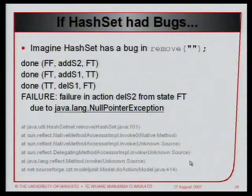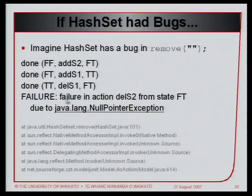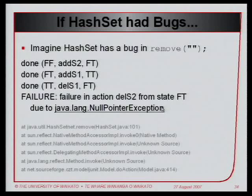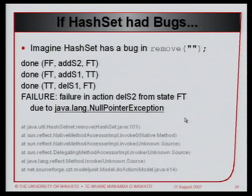Imagine HashSet had a bug — say if you try to remove an empty string, something goes wrong. When we run it, we'd see a few transitions working correctly and then get an error report like: 'Failure in action delete string 2, from state false-true' and maybe a null pointer exception, along with a stack trace. This is just an imaginary example — I don't want to be sued. In reality, I've run this on HashSet and it didn't detect any bugs.